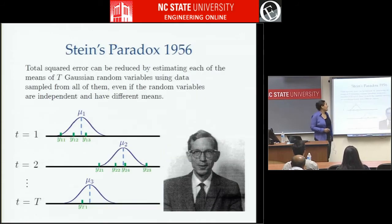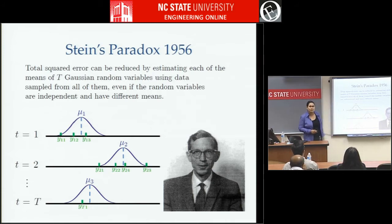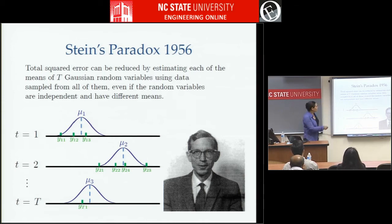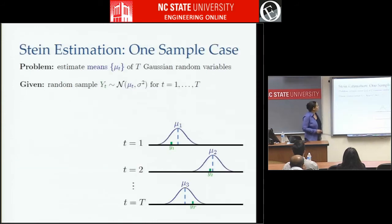So it was very surprising when in the 1950s, Stein came up with a new estimator — referred to as Stein's paradox because it was so shocking and confusing at the time. What Stein showed is: if I have three different distributions and I want to estimate the means of all three — mu1, mu2, and mu3 — assuming those distributions are Gaussian and completely independent with no statistical dependence, I can do a better job of estimating each mean if I use samples from the other distributions.